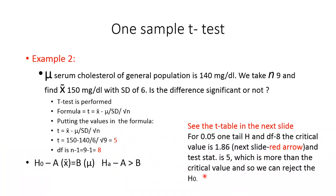Since the test statistic of 5 is more than the critical value of 1.86, we reject the null hypothesis. The null hypothesis states there is no difference between the sample mean and the population mean, while the alternate hypothesis states the sample mean (x-bar) is greater than the population mean. We reject the null and conclude the difference is statistically significant.